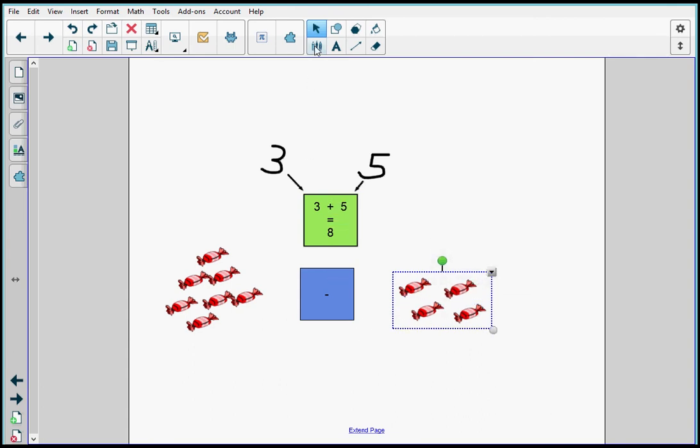And then up at the top I'm going to grab my pen again and I'm going to draw a line from the group to the subtraction box. And as you can see, I have my number three.